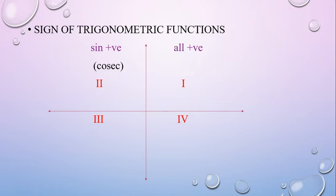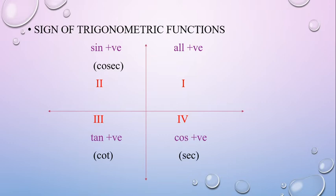The first quadrant is all positive. The second quadrant is sin positive. The third quadrant is tan positive. The fourth quadrant is cos positive.